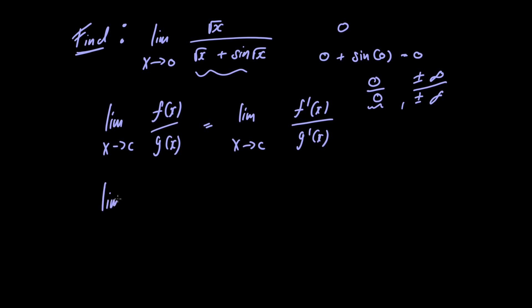Taking the limit as x approaches 0, we rewrite √x as x^(1/2). To take the derivative of x^(1/2), we use the power rule: bring down the power,